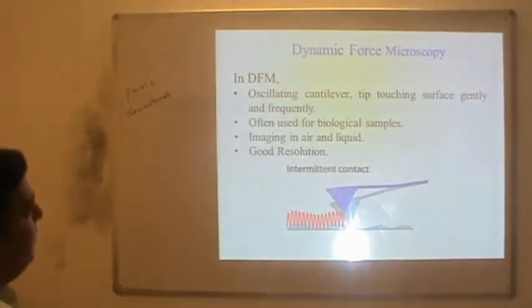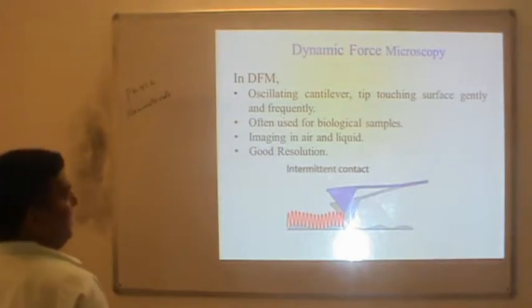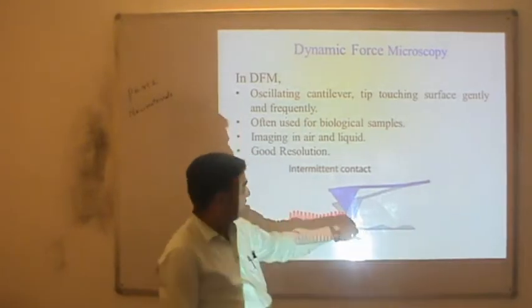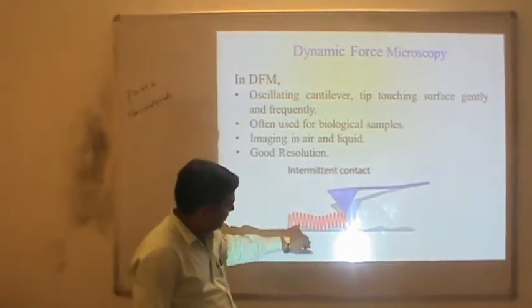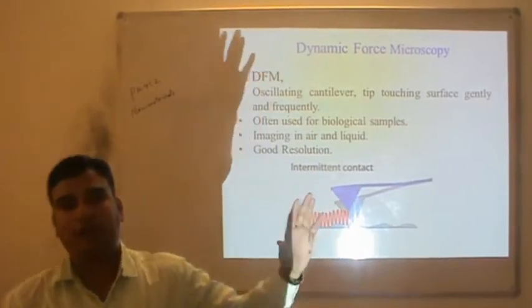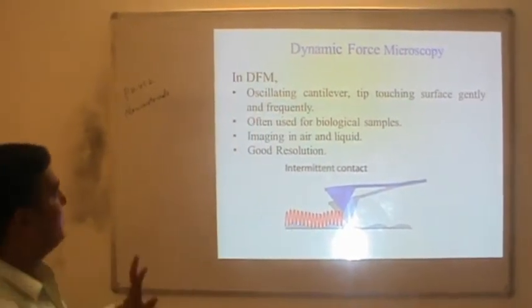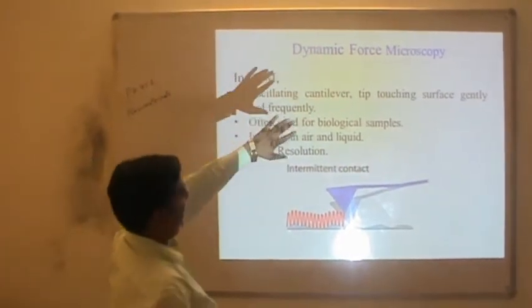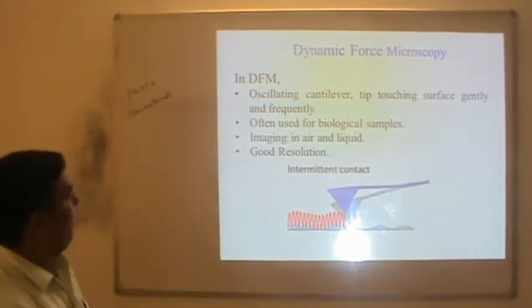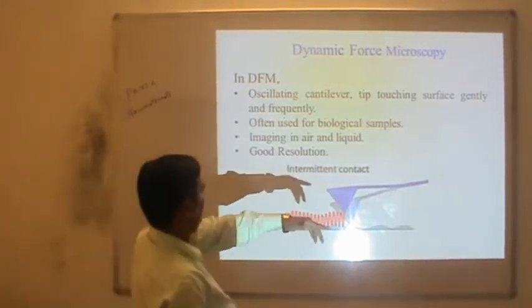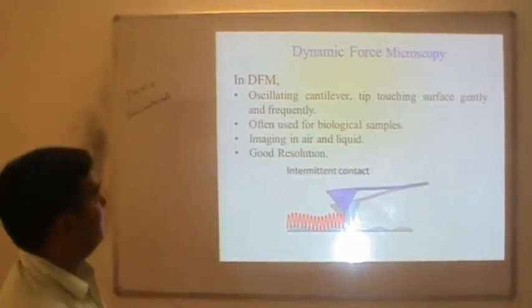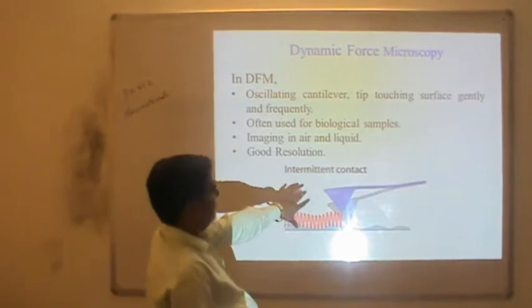To summarize dynamic force microscopy: the oscillating cantilever touches the surface gently and frequently. The tip oscillates as shown, touching the surface and forming an image that gives information about the sample. DFM uses an oscillating cantilever touching the surface delicately and frequently, and is most often used for biological samples because the damage to biological samples is minimal.